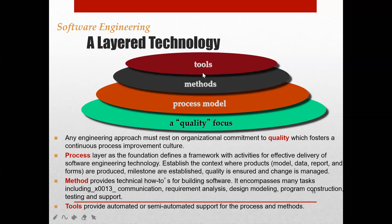The last layer is tools — there are many varieties of tools available in the market that support your process and methods. In software engineering, we will study all the details inside the methods: requirement analysis, design modeling, program construction, testing, support, and maintenance. If asked what layered technology is, the answer is: quality, process model, methods, and tools.